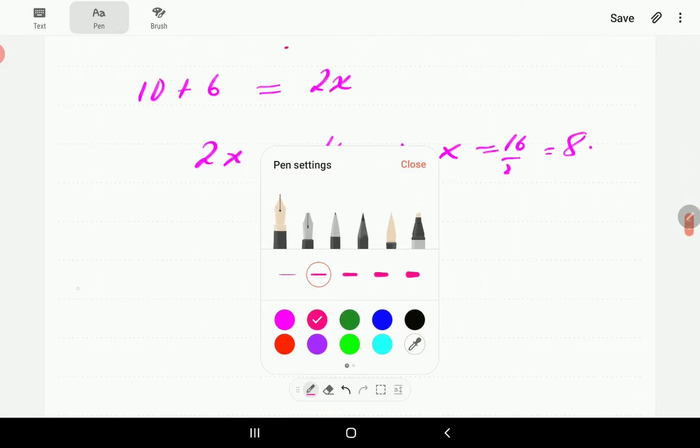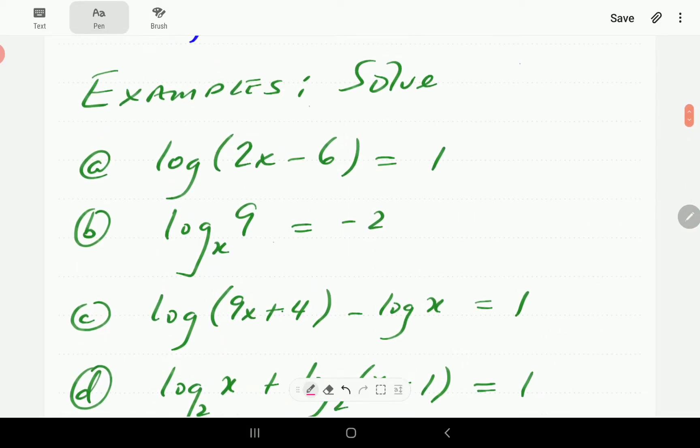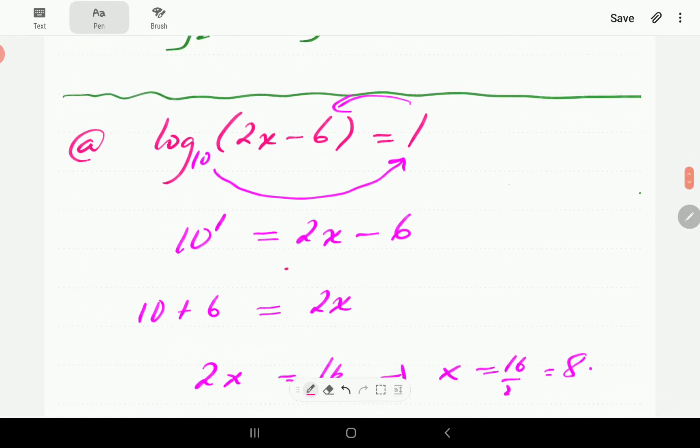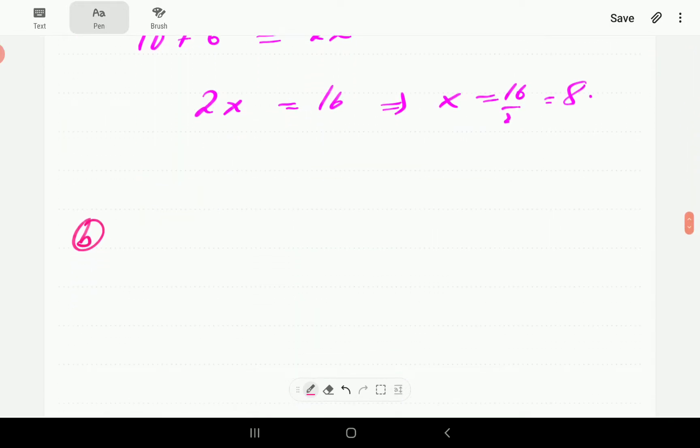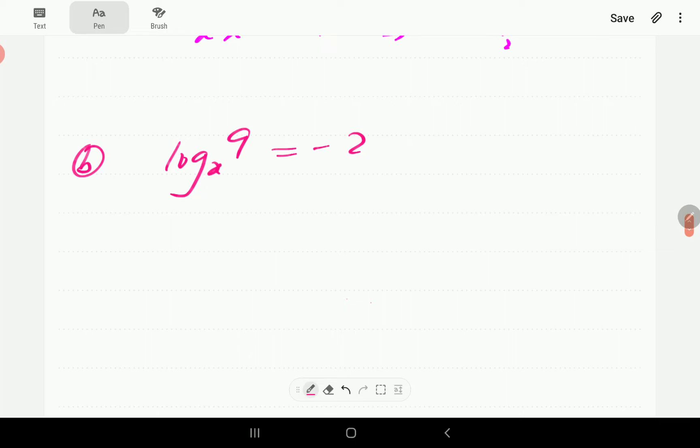In the second one, we've got log 9 base x is equal to negative 2. So again, the base this time is unknown x. We've got x to the power negative 2 must be equal to 9.